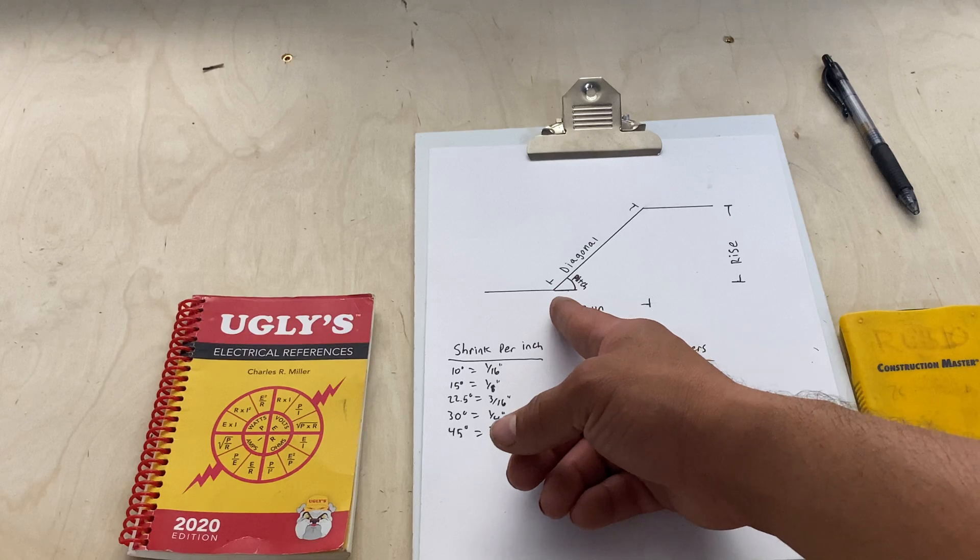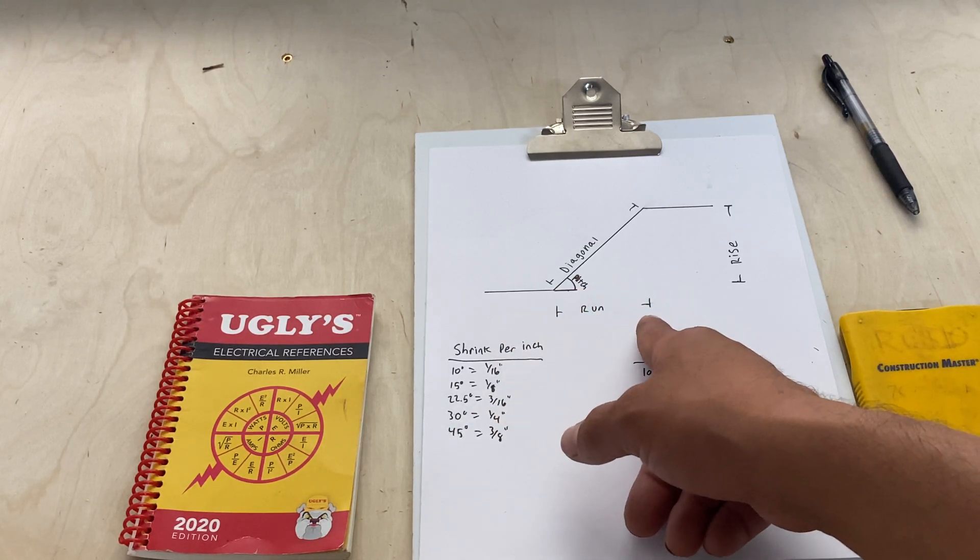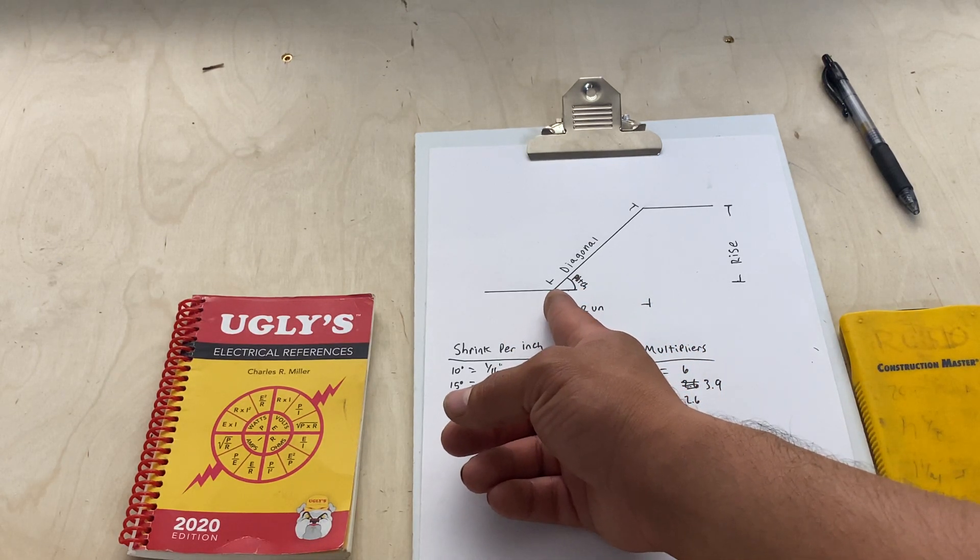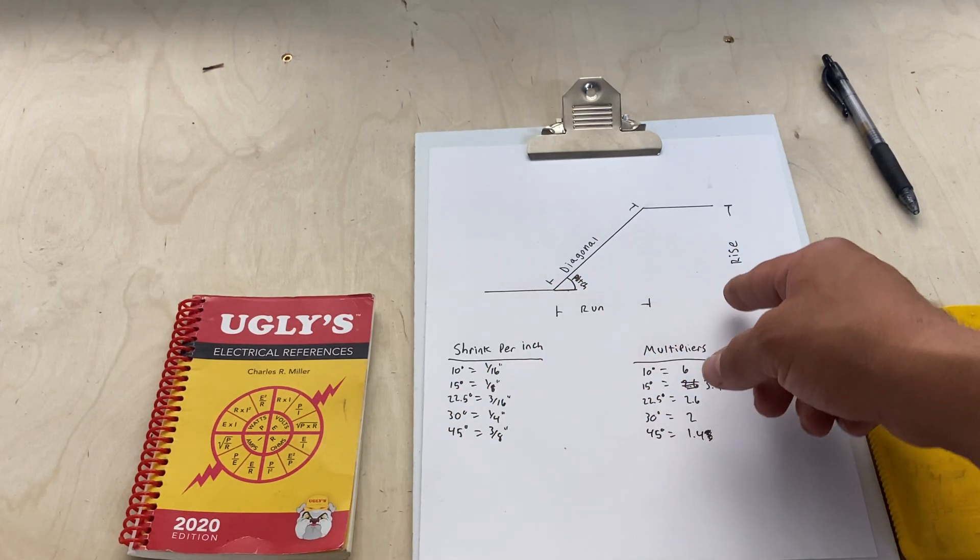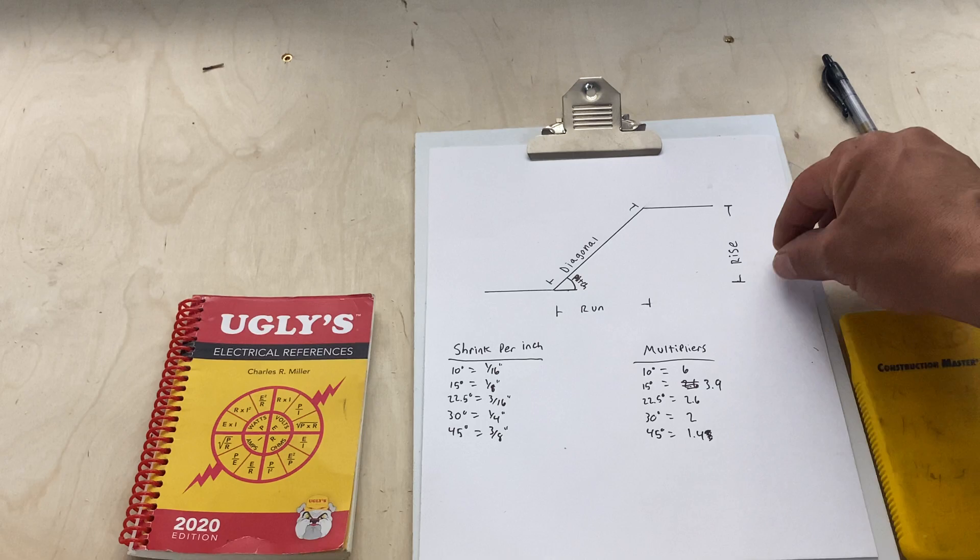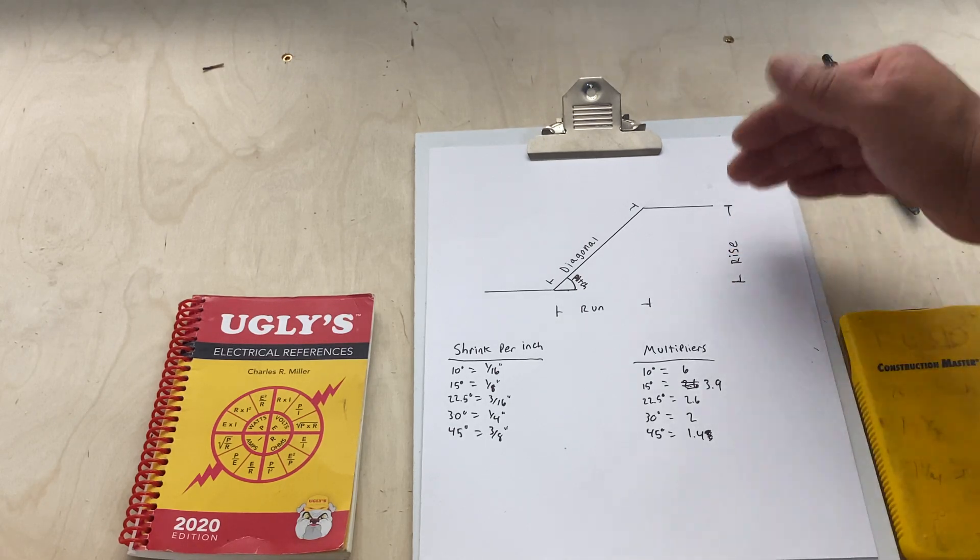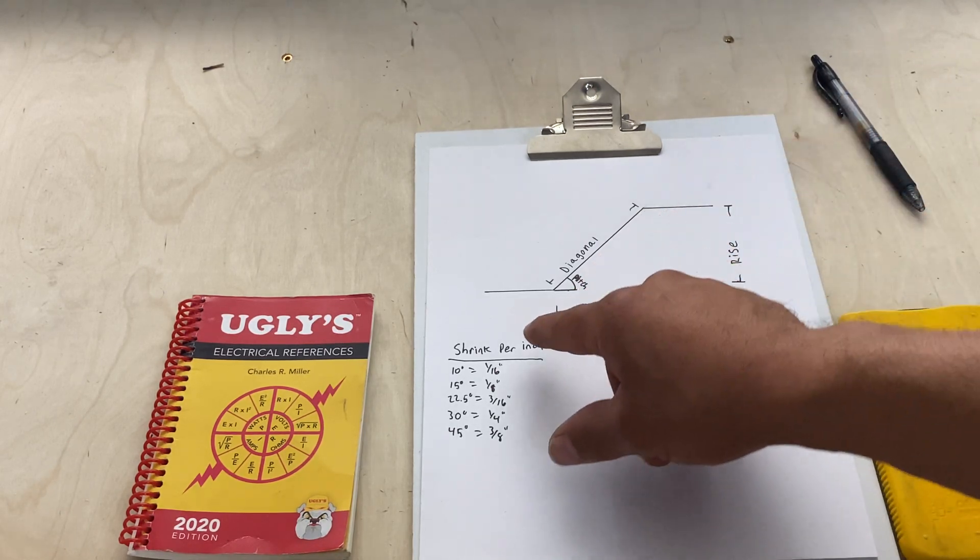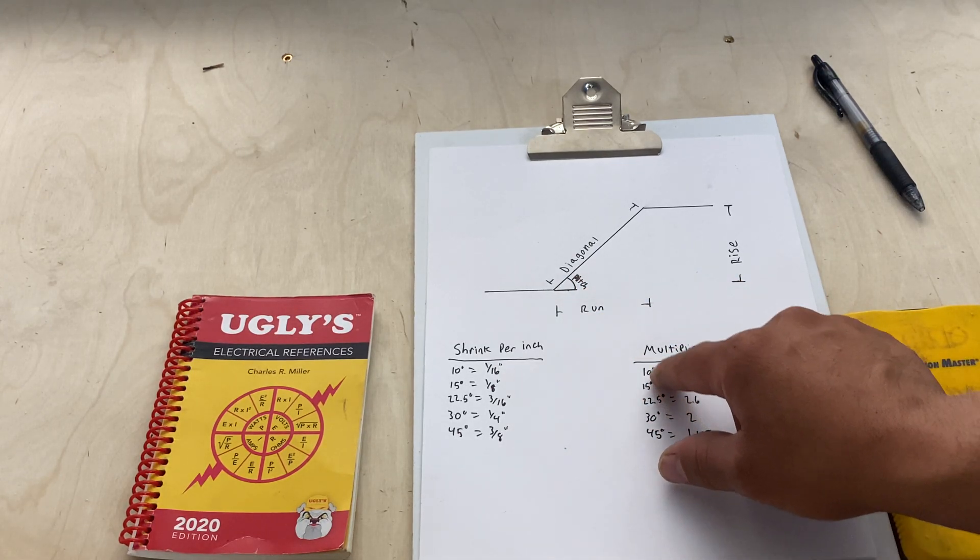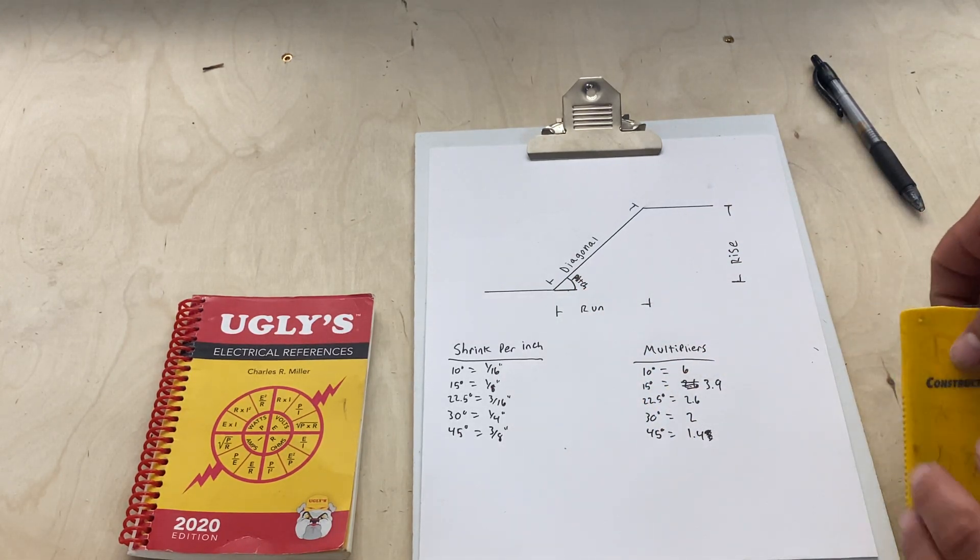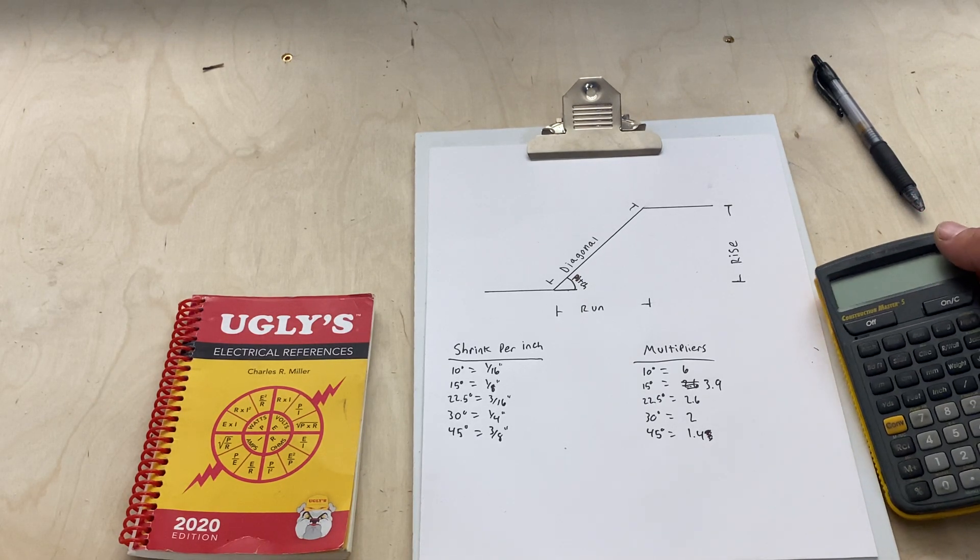You have your run, that's your measurement center-to-center running parallel with your piece. Then you have your rise, which is the amount that you're shifting over, and then you have your pitch, the angle that you end up using.